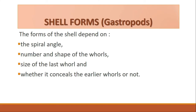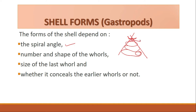Let's get started with another very important topic in gastropods — the different shell forms found in gastropods. The form of the shell depends upon the spiral angle. Here in a gastropod, the sides of the spire converge near the protoconch, and this convergence is known as the spiral angle.